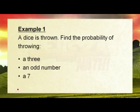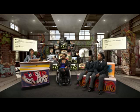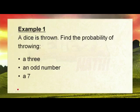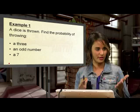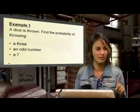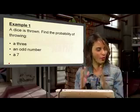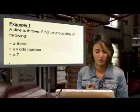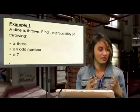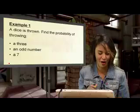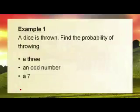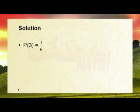Let's use that formula. A dice is thrown — find the probability of throwing a three. A dice has six sides. There's only one three between the numbers one and six, so there's only one chance of getting a three. Therefore, you'll have one over six.